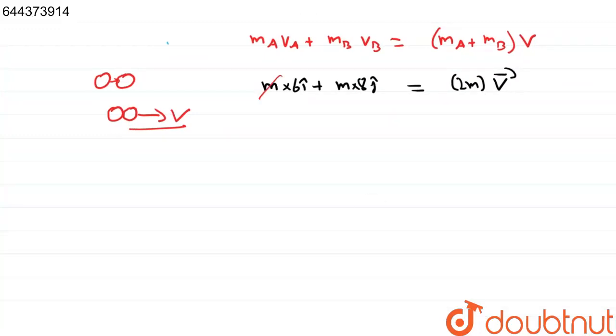So, m cancels from both sides. Dividing by 2, we get vector V equals 3î plus 4ĵ.